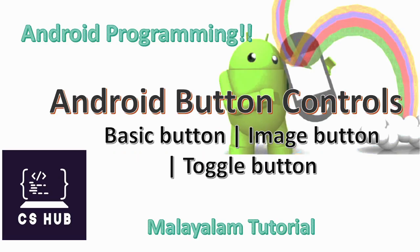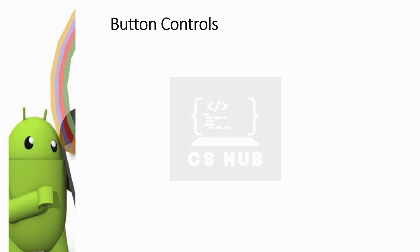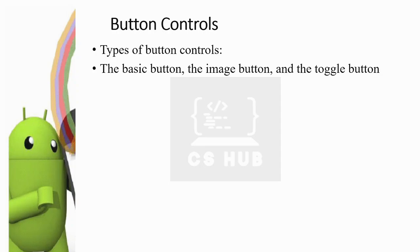Hello everyone, welcome to Computer Science. Our subject is Android Programming, topic: Android Button Control. We will be discussing basic button, image button, and toggle button. Button controls are part of the user interface. We also have text controls like TextView, EditText, and AutoCompleteTextView. In the user interface it is important to have button elements, and we use buttons to submit a particular activity or invoke a particular action, such as clicking a button after entering a username or password.